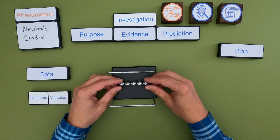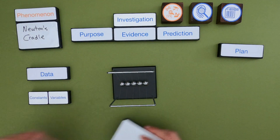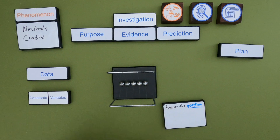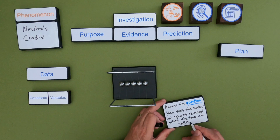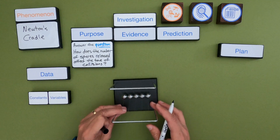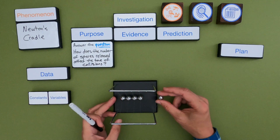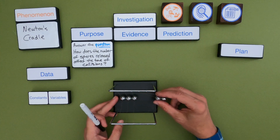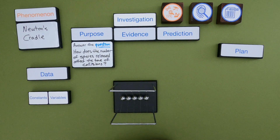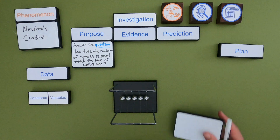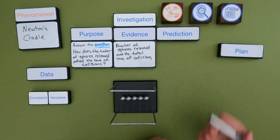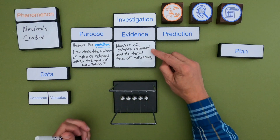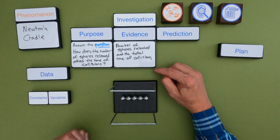Let's say I'm going to focus on this one purpose. So I'm interested in how does the number of spheres released — one sphere versus two spheres — affect the time of collisions? In other words, how long is it going to keep going? If I really want to answer that question, the first thing I have to think about is what evidence am I going to gather. The evidence would be the number of spheres I'm releasing each time, and also the total time until the collisions stop.